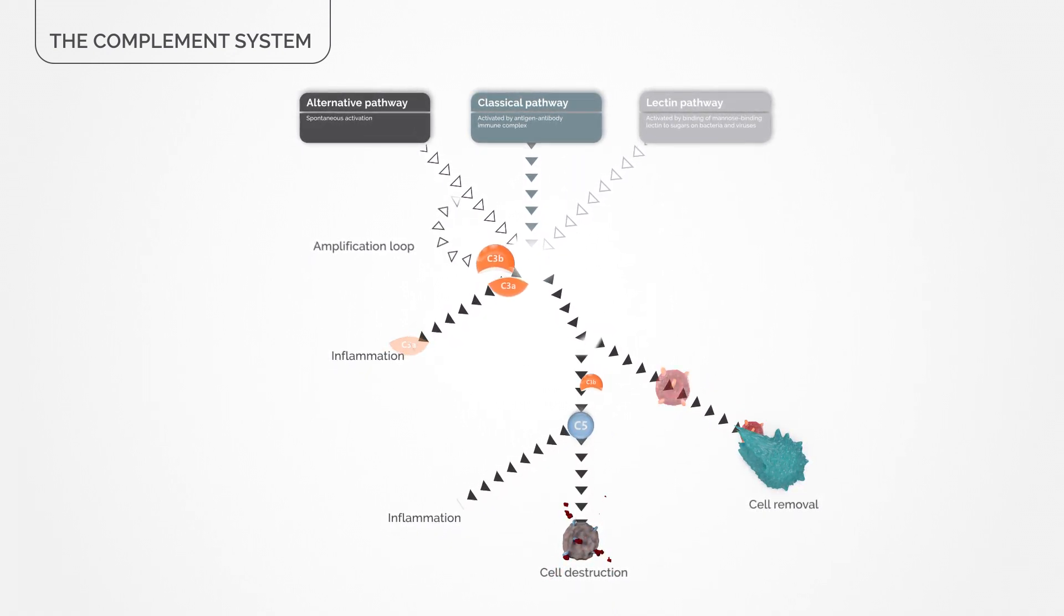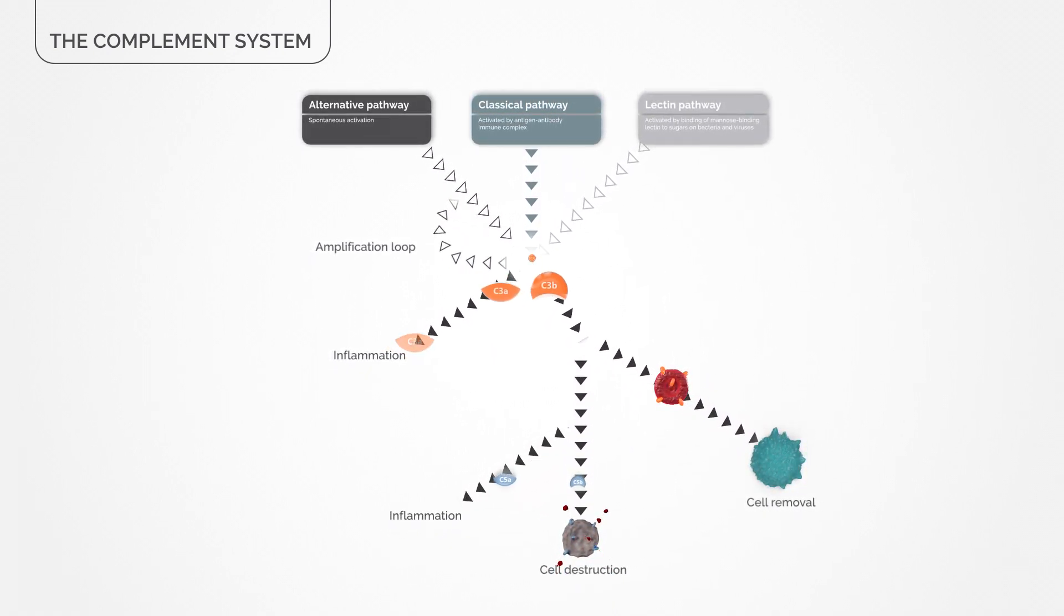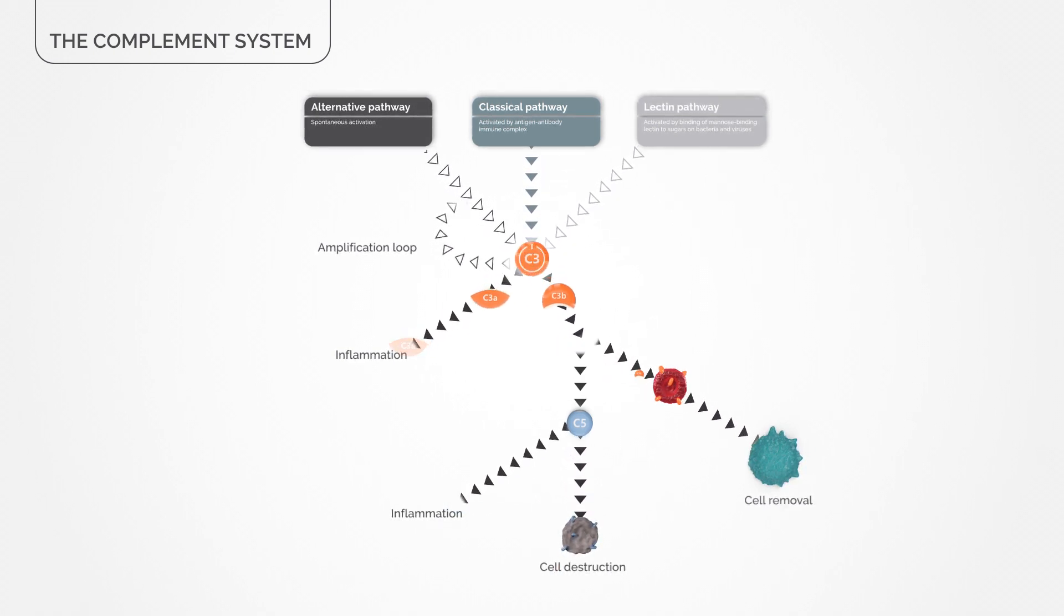C3 serves as the master switch, controlling all downstream effectors that ultimately cause destruction of the cell.